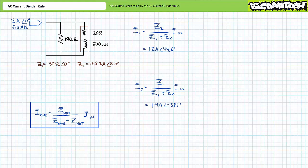Because the setup of the AC current divider rule is somewhat counterintuitive, it helps to perform a quick sanity check. Note the impedance path with the smallest magnitude — Z2 in this case — draws the larger amount of current. Conversely, note the impedance path with the larger magnitude — Z1 in this case — draws the smallest amount of current. It makes sense.